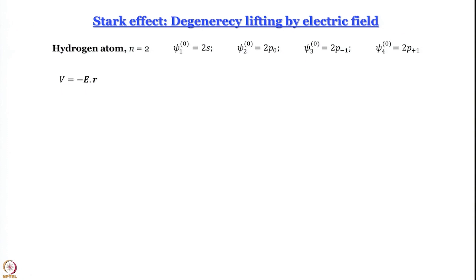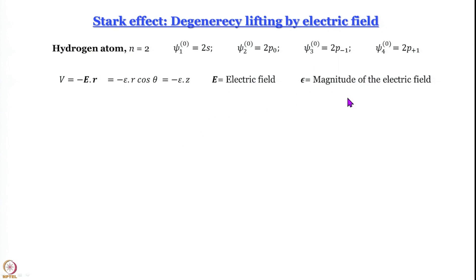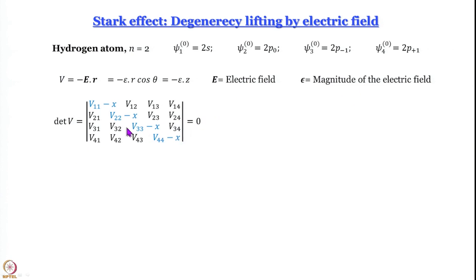The perturbation V in this case equals minus epsilon·r·cos(theta), which we can write as minus epsilon·z, where epsilon is the magnitude of the electric field. The secular determinant is a 4×4 matrix. We designate 2s as orbital 1, so V_11 involves the 2s orbital with itself, V_12 involves the 2s orbital with 2p₀, V_13 involves 2s with 2p₋₁, and so on.